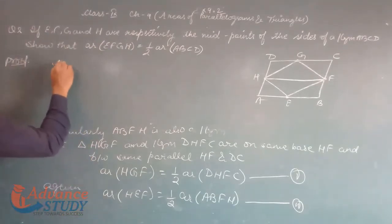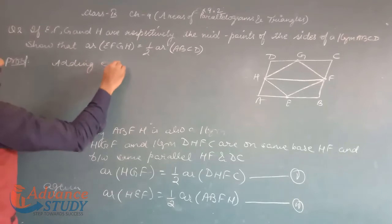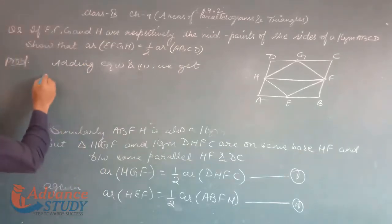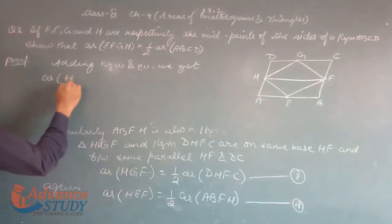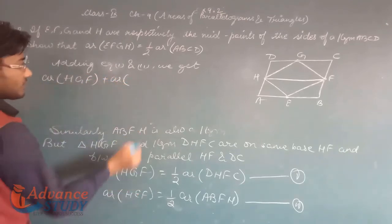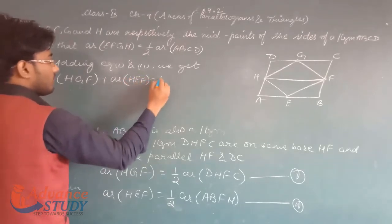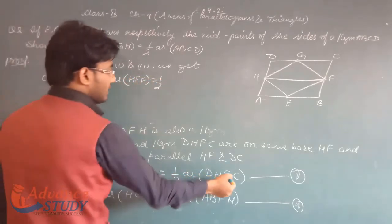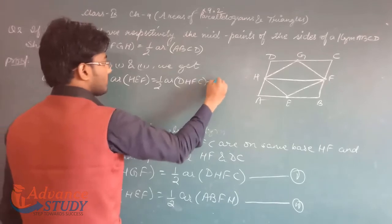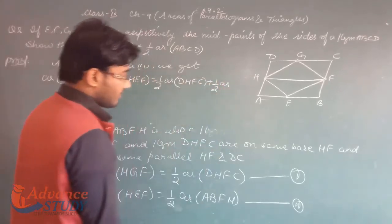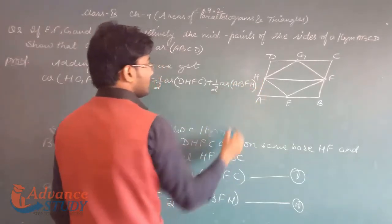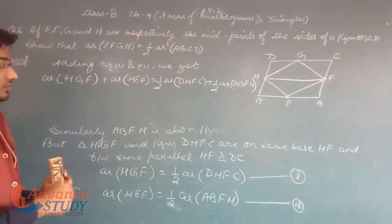Adding equation 1 and equation 2, we get: area of HGF + area of HEF = 1/2 area of DHFC + 1/2 area of ABFH.